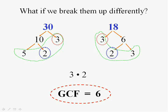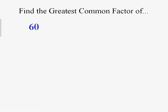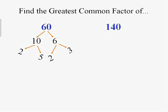So this is an excellent method to use because it works all the time. We'll do a couple more. Let's do 60 and 140. I want the greatest common factor. I want the largest number that goes into both of them. I'll break up 60 into 10 and 6. I happen to choose them. 10 breaks up into 2 and 5 and 6 breaks up into 2 and 3. So that's as far as I can go.